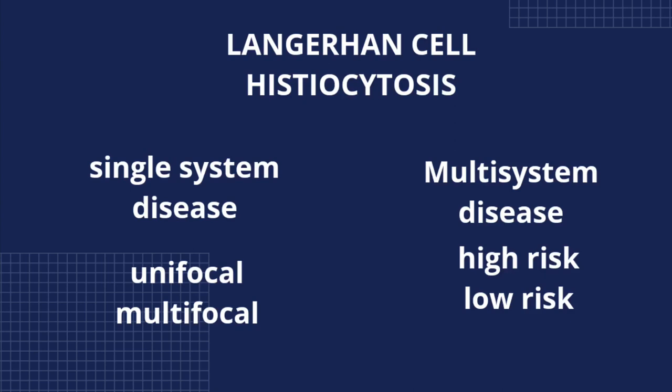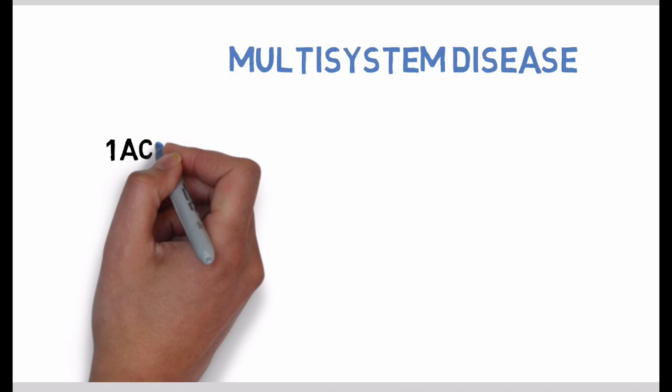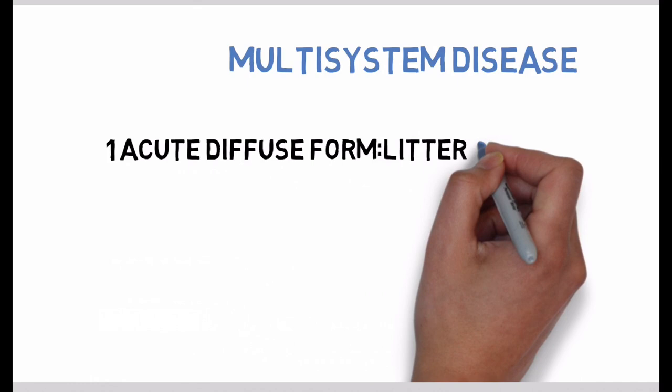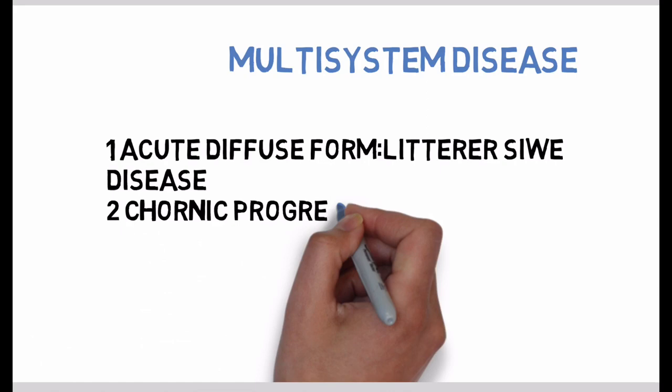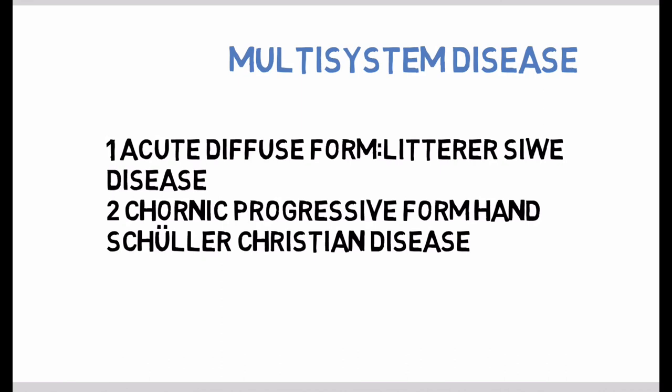The two multi-system clinical presentations of Langerhans cell histiocytosis can be acute or chronic. When patients develop the acute diffuse form, it is called Letterer-Siwe disease. When patients develop the chronic progressive form, it is called Hand-Schüller-Christian disease.